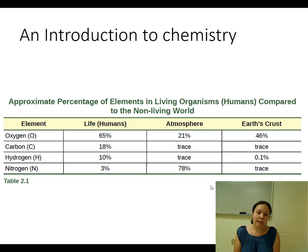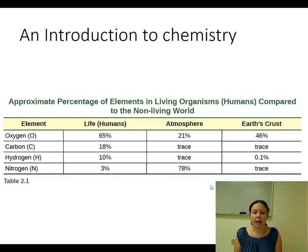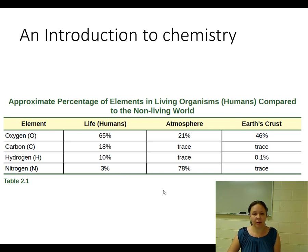These four elements make up approximately 96 to 97 percent of the human body. The rest of that three or four percent is made up by elements in very small amounts, and we call those trace elements — things like magnesium, iron, zinc, and all of those other elements from the periodic table that are part of the human body.